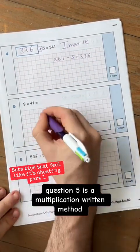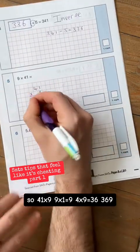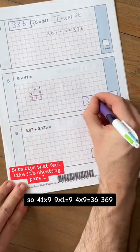Question five is a multiplication written method. So 41 times 9, 9 times 1 is 9, 4 times 9 is 36, 369.